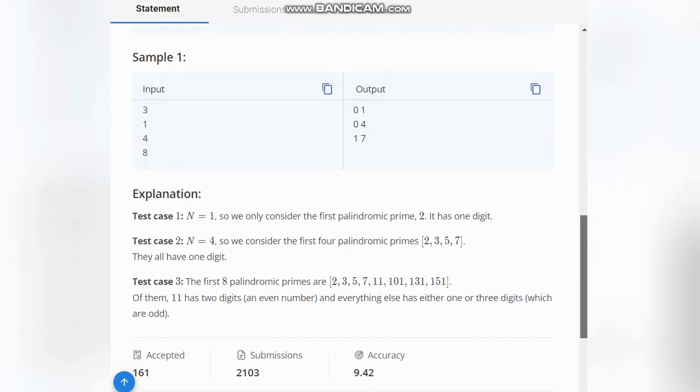For the test cases, first we have N=1. The first palindromic prime is 2, which has only one digit, an odd number of digits. Hence the output is 0,1. For N=4, there are also no even-digit numbers, so the output is 0,4, as we have 2, 3, 5, 7 as our four palindromic primes.